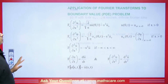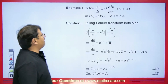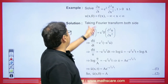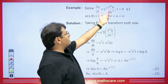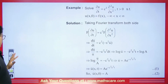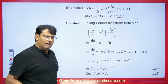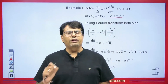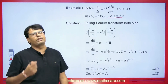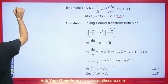I will explain through some questions. One question is given: ∂²u/∂t = c² ∂²u/∂x², with u(x,0) = f(x) and x from −∞ to ∞. You are asked to solve this equation using the Fourier transform. Here x is given from −∞ to ∞, and neither u(0,t) nor ∂u/∂x at x=0 is given, so we can use neither the Fourier sine transform nor the Fourier cosine transform. We will use the Fourier transform on both sides.